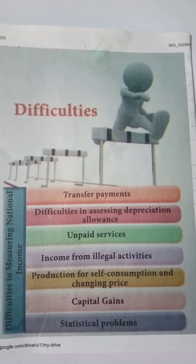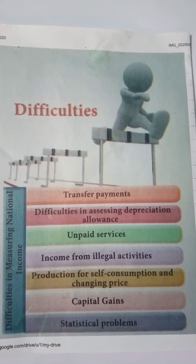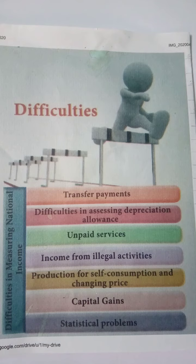The next difficulty is production for self-consumption and changing price. Farmers keep a large portion of food and other goods produced on the farm for self-consumption. The problem is whether that part of the produce which is not sold can be included in the national income or not.